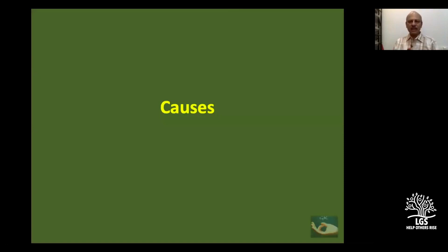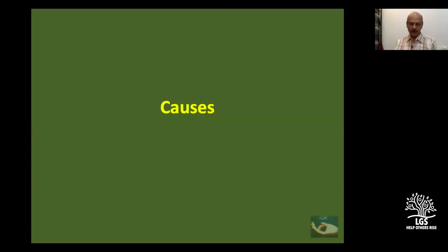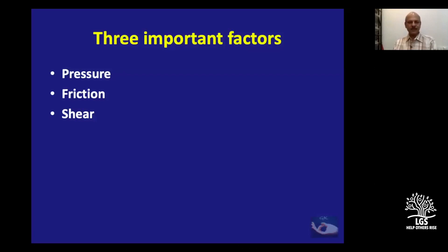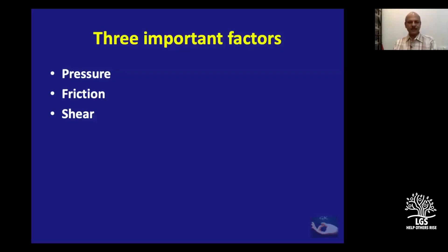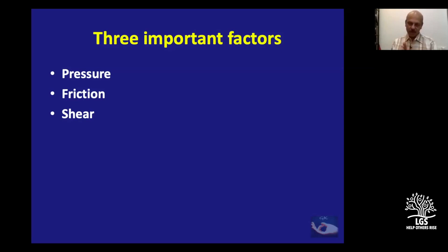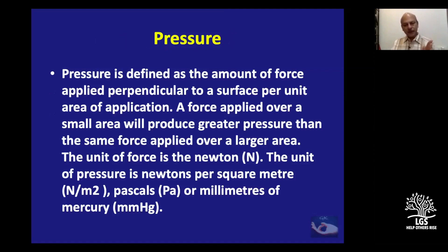We need to understand that pressure alone is not the only problem — there are many other factors. There are three important factors for a pressure ulcer to develop: pressure, friction, and shear. Pressure is defined as the amount of force applied perpendicular to a surface per unit area of application — the amount of pressure applied over a particular area at right angles.